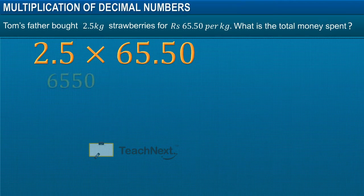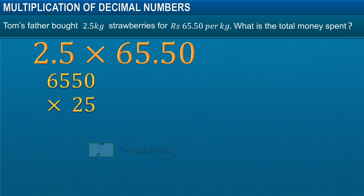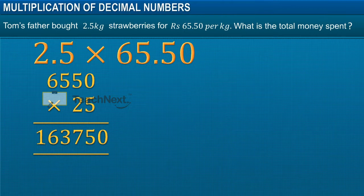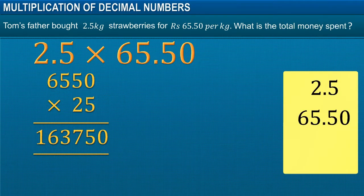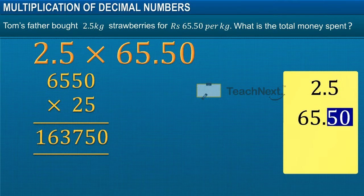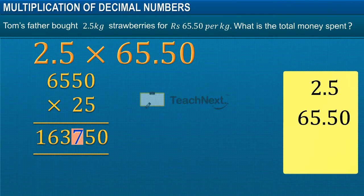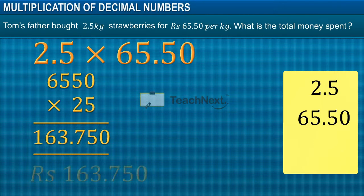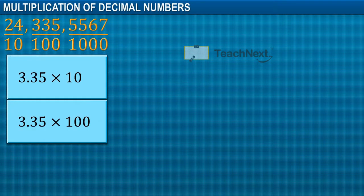To multiply two decimal numbers, first ignore the decimals for both the numbers and multiply them. On multiplying, we get 163750. Now, there are two decimal numbers here. The first number has one decimal place, while the second has two. So we will add the decimal point three places from the right to the left in the product. That gives us 163 rupees and 75 paisae.